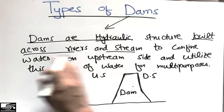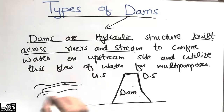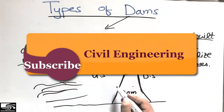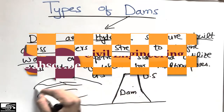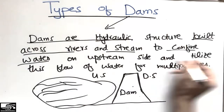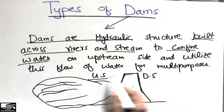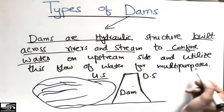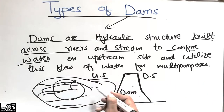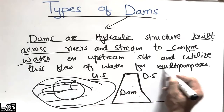They are built across the river — for example, the river is coming from this side, so we build the dam across the river and stream to confine water. It stores the water here in this portion. This is the upstream side, and we utilize this flow of water for multiple purposes.